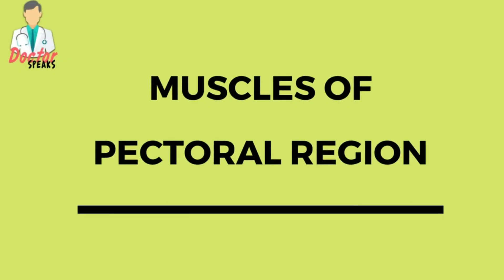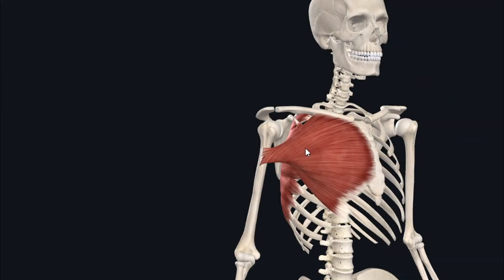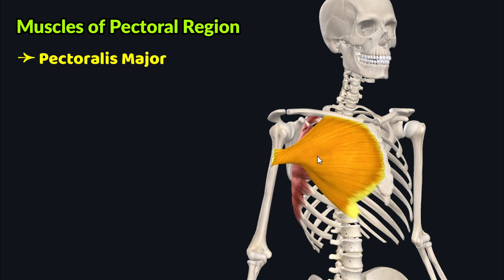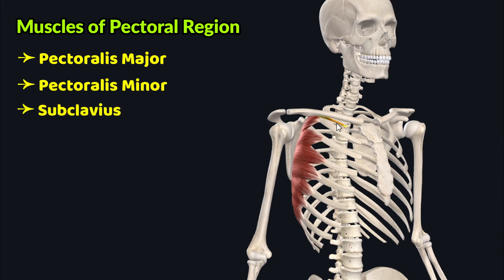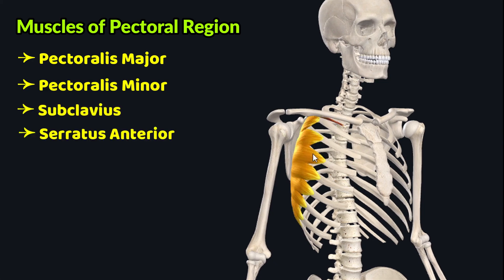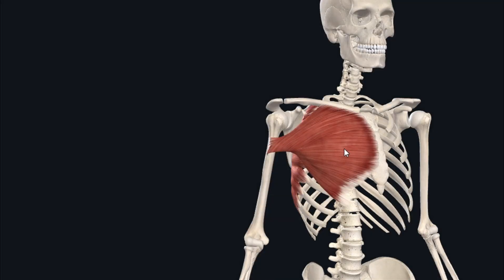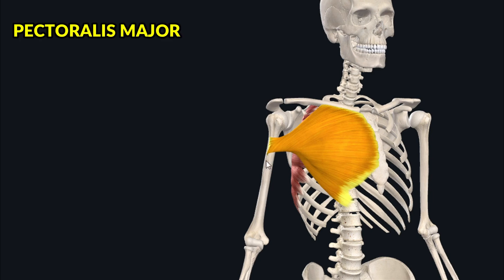Welcome back. As we have already studied the muscles of the pectoral region separately, let's give a quick review. There are four muscles which constitute this region: the pectoralis major, the pectoralis minor, the subclavius, and the serratus anterior. The most superficial muscle of this region is this fan-shaped muscle, the pectoralis major.